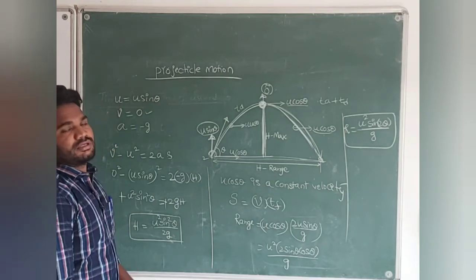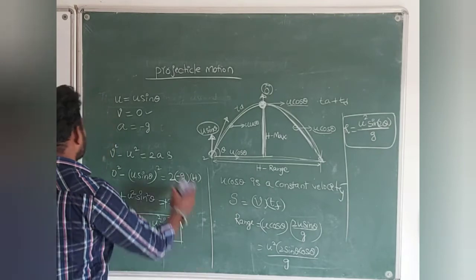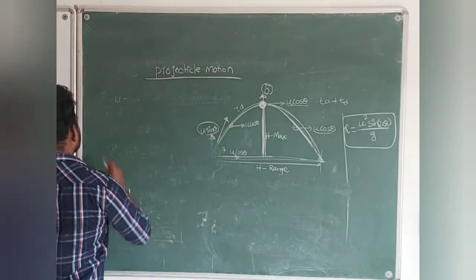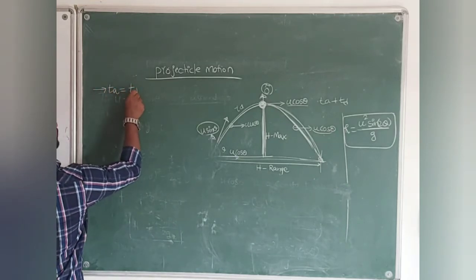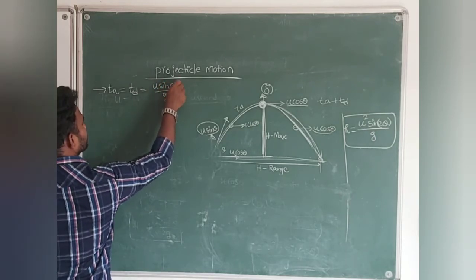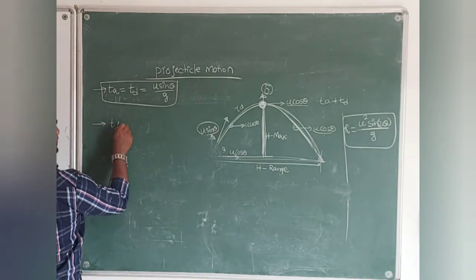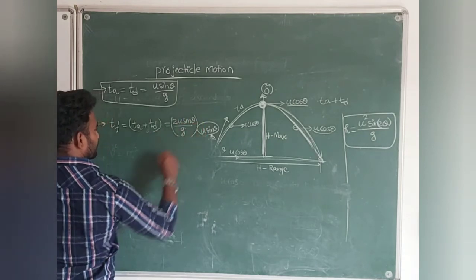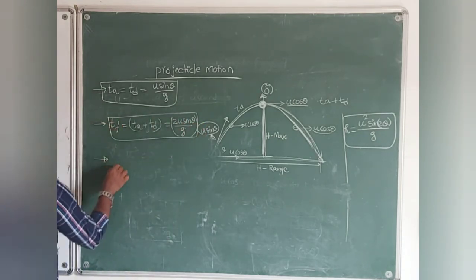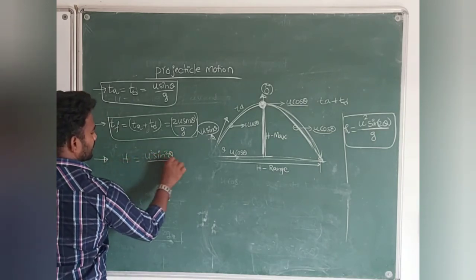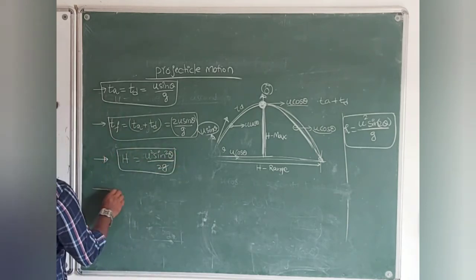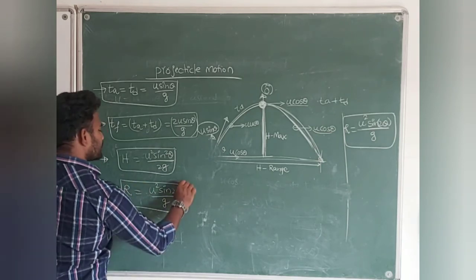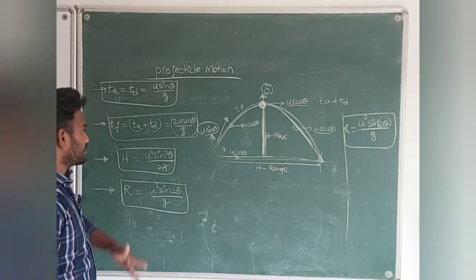I hope all the formulas are clear. Let me recap all four formulas. First: time of ascent = time of descent = u sin theta / g. Second: time of flight = 2u sin theta / g. Third: maximum height H = u² sin² theta / 2g. Fourth: range R = u² sin 2theta / g. Take a screenshot to remember these. We will go for the numericals in the next session. Thank you.